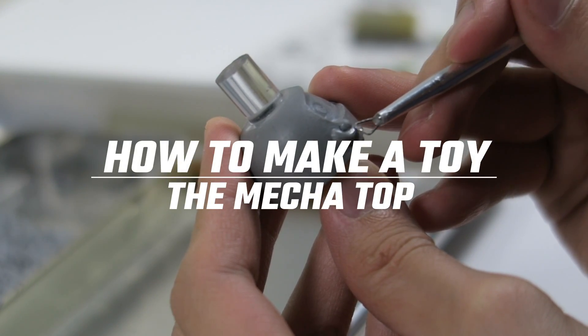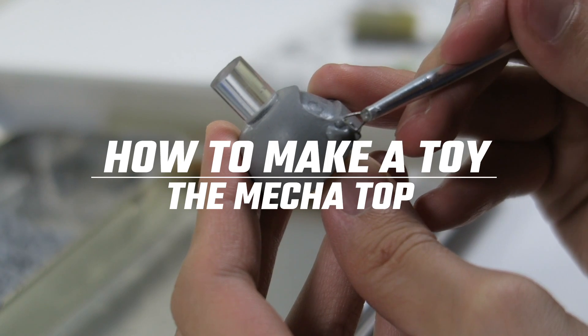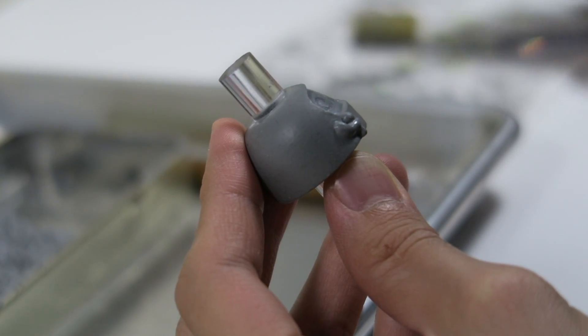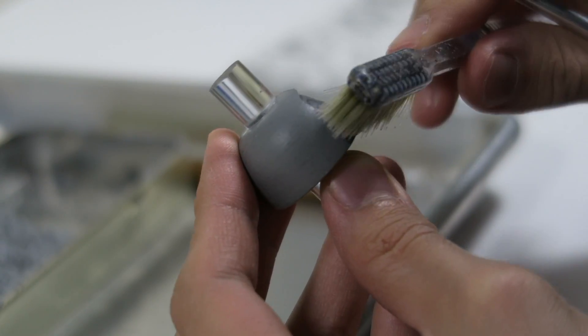Hi there, I'm Kevin and I'll be showing you how to make a toy. This is my very own invention, the mecha top. It's a rock-paper-scissors spin top and I'll show you how it works later on.